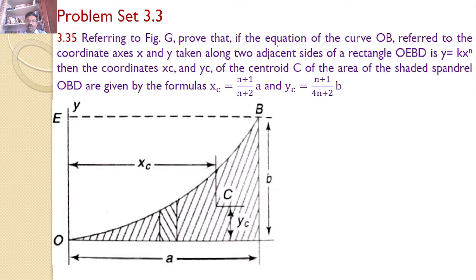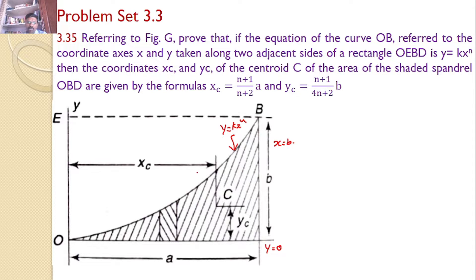Referring to the given figure, prove that if the equation of the curve OB referred to the coordinate axes X and Y, taken along two adjacent sides of the rectangle OEBD, is Y = K·X^N, then the coordinates XC and YC of the centroid C of the shaded spandrel area OBD are given by XC = (N+1)/(N+2)·A and YC = (N+1)/(4N+2)·B. The curve equation is Y = K·X^N, with a horizontal line Y = 0 and a vertical line X = A forming the shaded area.